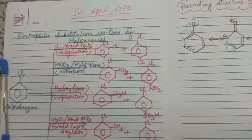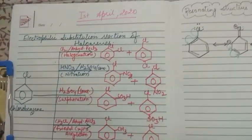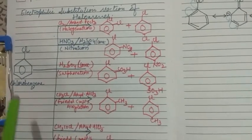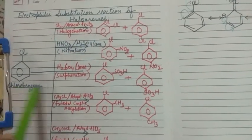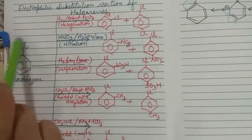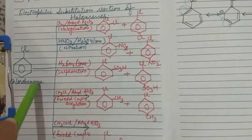Good morning students. Today we will start with the next topic of halogenation and haloarenes. The next topic is electrophilic substitution reaction of haloarenes. These are some of the important reactions. Let us take the example of chlorobenzene, which is an example of haloarenes.